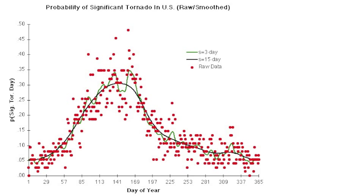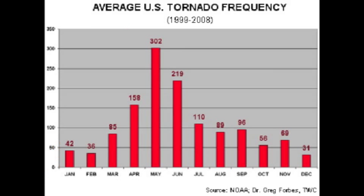In this case, the data was smoothed by s equals 3 and s equals 15. The greatest probabilities occur around April, May, and June, which is similar to the probabilities of all tornado days, not just the significant ones.